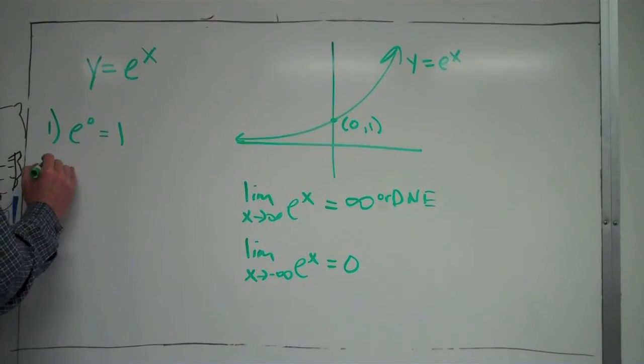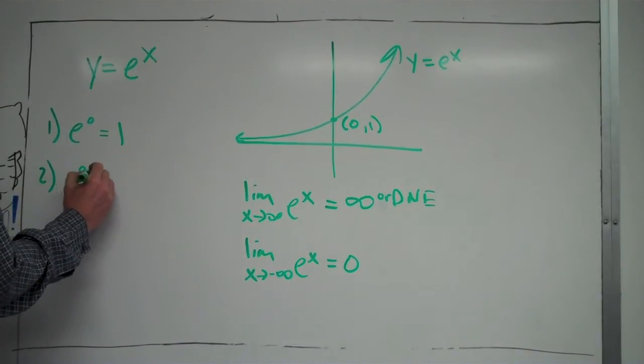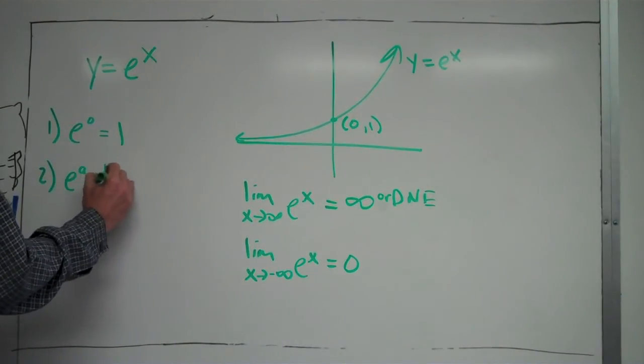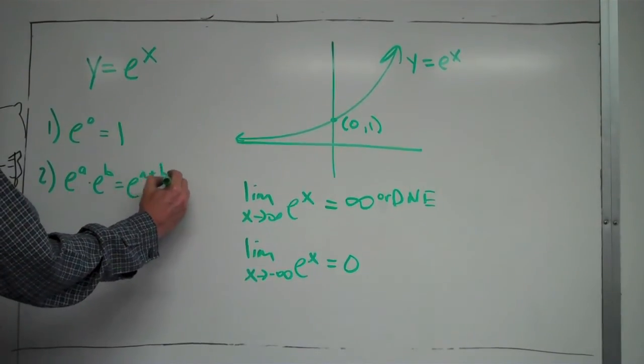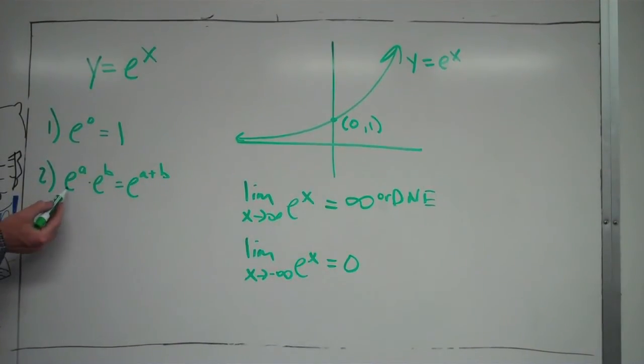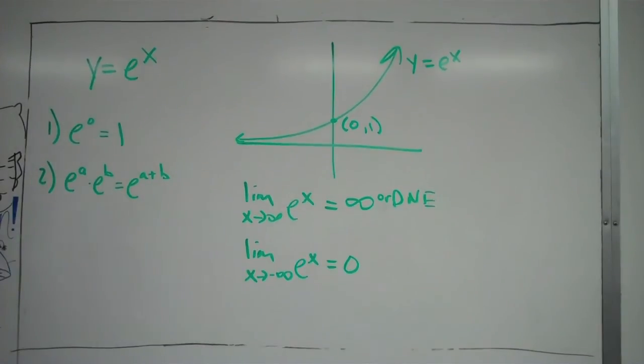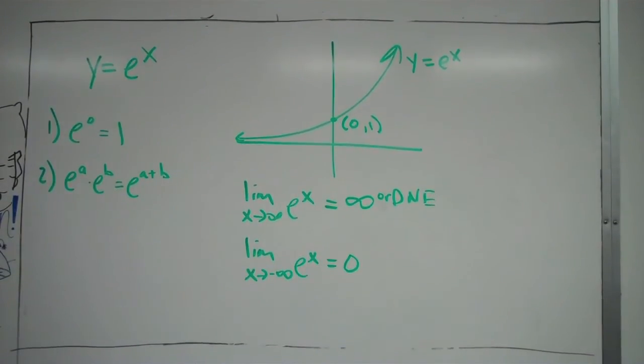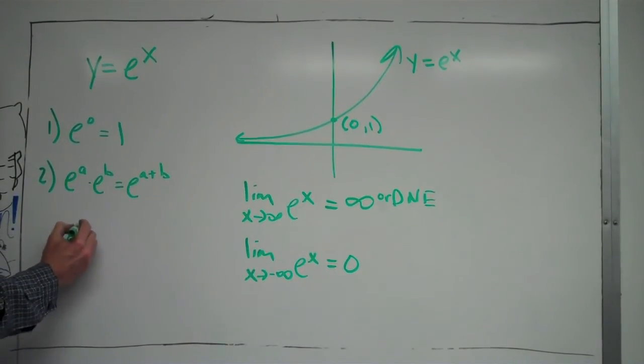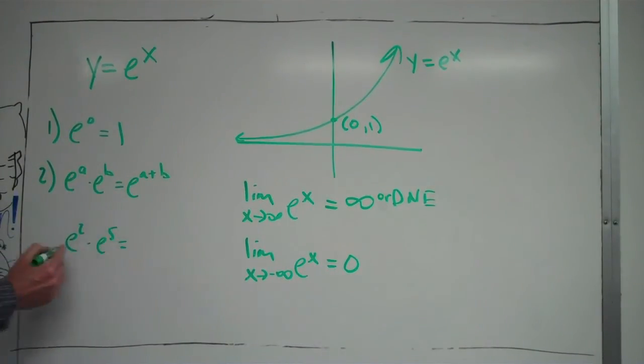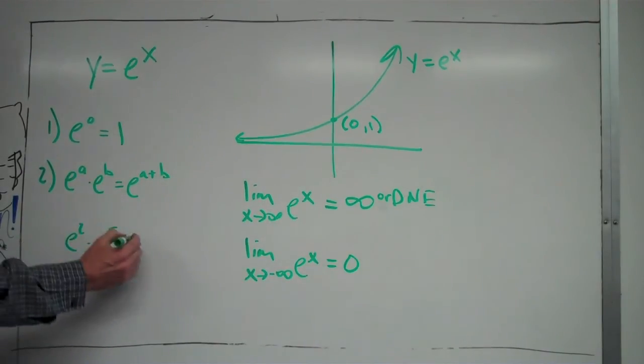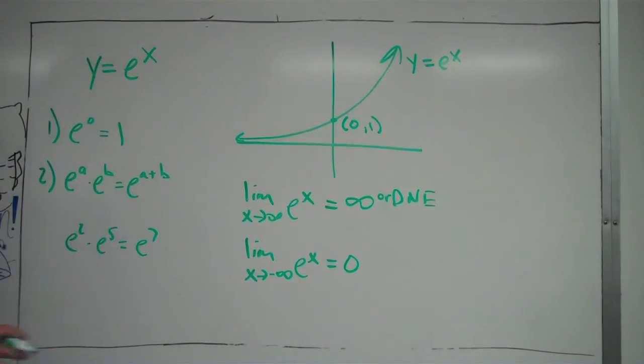Also, the function e follows exponent rules. So, for instance, like e to the a times e to the b is equal to e to the a plus b. Usually, we see that same thing with x. So, for instance, it would be like x to the a times x to the b equals x to the a plus b. But that works with substituting anything in for any of those variables. So, for instance, if you had something in a problem that was e squared times e to the 5th, those would combine together to just be e to the 7th. For example.